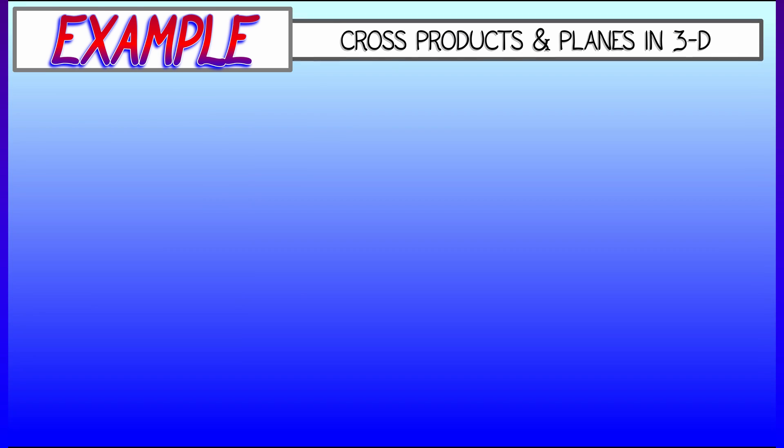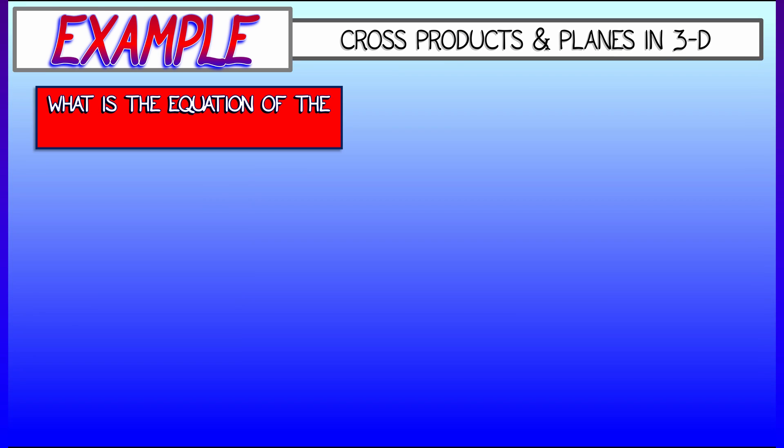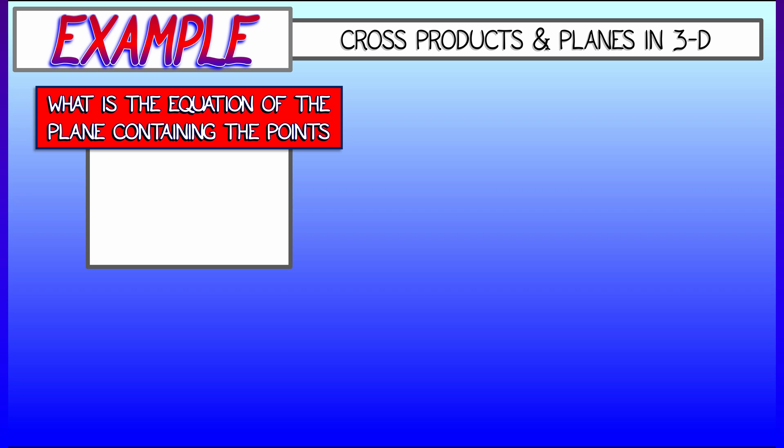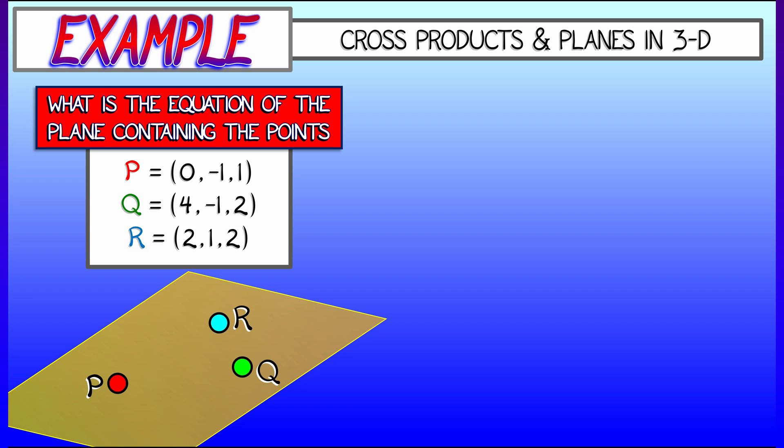Let's take a look at a simple example where we might be using the cross-product to help us with something geometric. Let's say I give you three points. Let's say P, Q, R: (0, -1, 1), (4, -1, 2), (2, 1, 2). Now, we all know that three points determine a plane in three-dimensional space, but I want to know what's the equation of the plane that contains these three points.